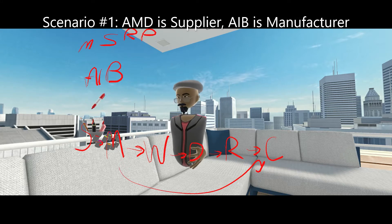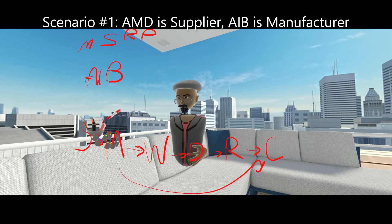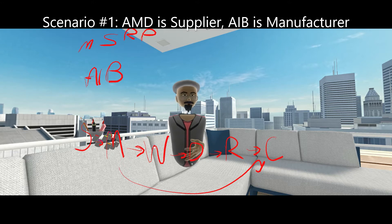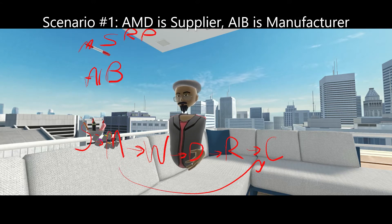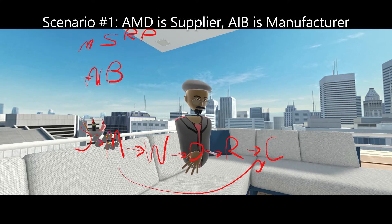Let's use a scenario: AMD produces a GPU chip. PowerColor, who produces the Red Devil GPU, buys that chip from AMD — AMD is fulfilling the supplier role. PowerColor is the manufacturer. They take that chip, buy other components like memory from Micron or Samsung, and assemble the PowerColor Red Devil GPU. As the manufacturer, PowerColor gets to set the MSRP — M is for manufacturer.